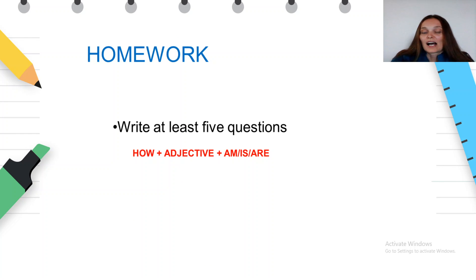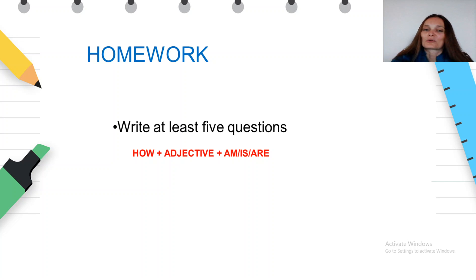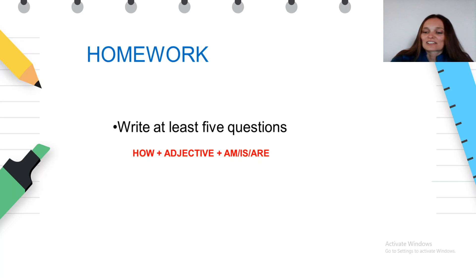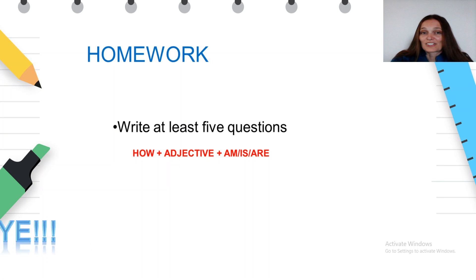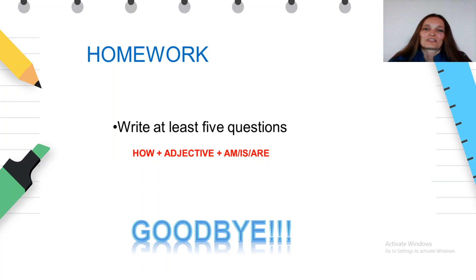Now I want you to write at least five questions for homework using this rule: how plus adjective plus am, is, or are. You can write more than five if you want and if you can, of course. And that's all for today. Thank you for your attention. Goodbye, everyone.